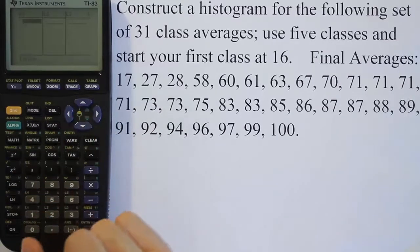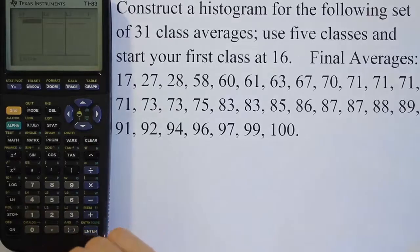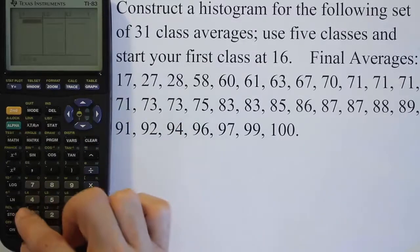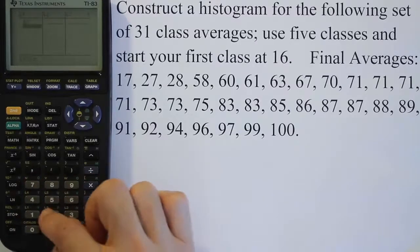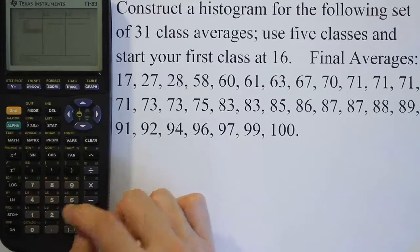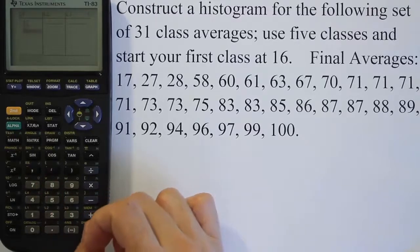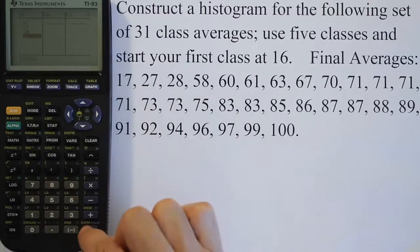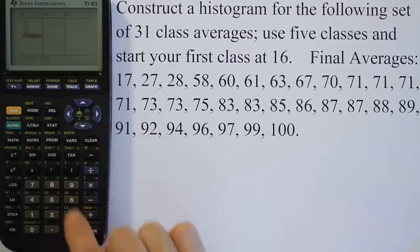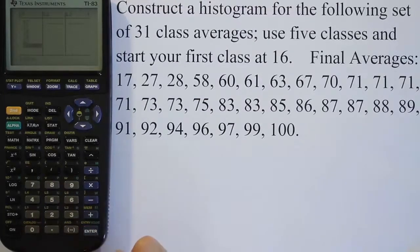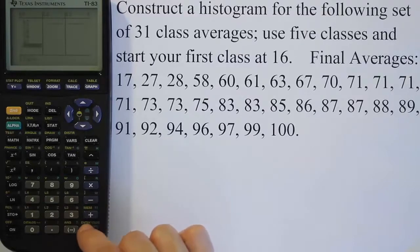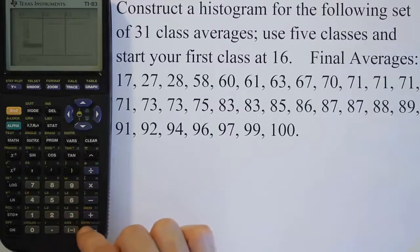Now I want to type in all those numbers that I see. So let's go ahead and do that. I'm going to type in 17 first, hit enter, then 27, hit enter, 28, hit enter. So it's just like using Excel basically, but we have an enter button here. So 58, press enter, 60, press enter, so on and so forth. I'm going to pause the video here and continue to enter all these numbers. You go ahead and do the same thing and then when we come back on, we'll have the data all on the list ready to be worked with.